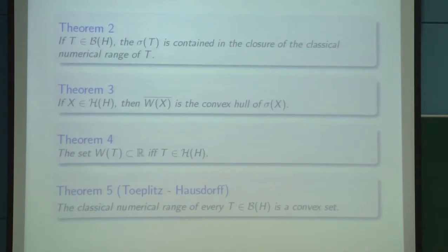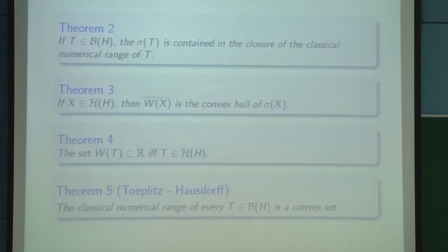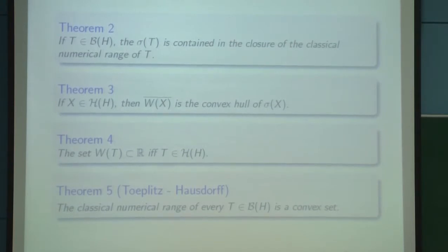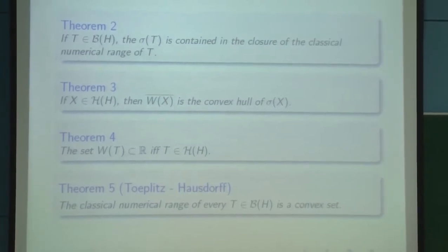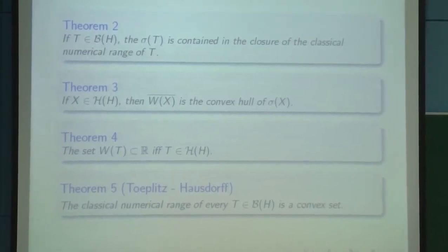The set of the numerical range of T lies in the real line if and only if it is self-adjoint. And lastly, the classical numerical range of T is a convex set — this is quite an interesting theorem.